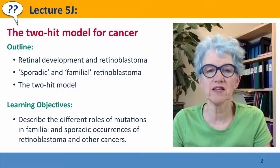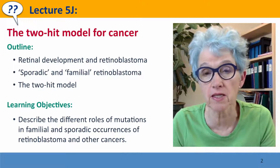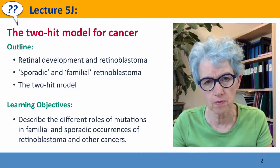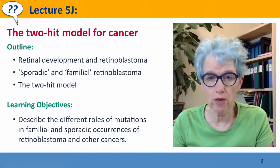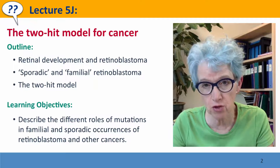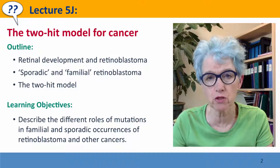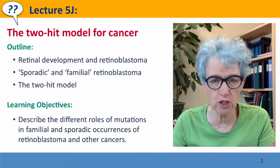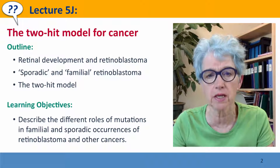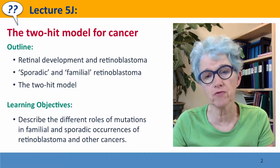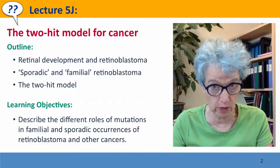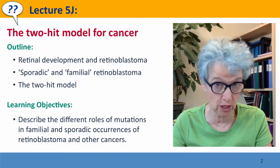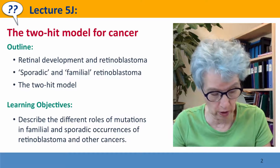Hi, everyone. Welcome back to Lecture 5J of Useful Genetics, where we're going to introduce the very important two-hit model for cancer. We'll talk about retinal development and a cancer of infants and small children called retinoblastoma, because this is a very good illustration of the two-hit model in action. We'll talk about sporadic and familial cases of retinoblastoma — terms that apply to many other genetic diseases, not just cancers — and we'll talk about the two-hit model.